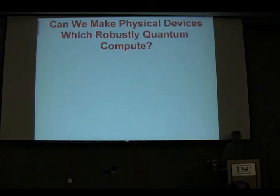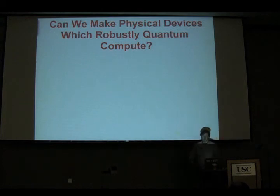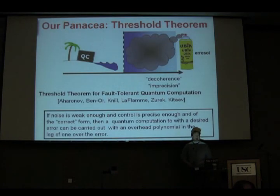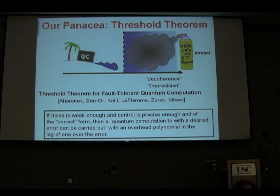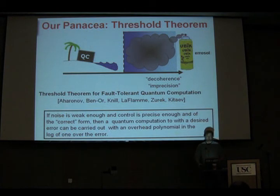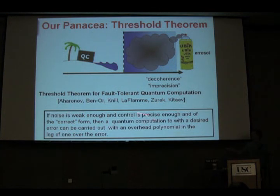The basic starting point is: can we make physical systems which robustly quantum compute? We know the answer to this — or at least we think we do. This is our panacea: the threshold theorem. As Daniel said in the first tutorial, it's basically a seminal result which tells us that we can do quantum computation if noise is weak enough and control is precise enough, and these are of the correct form.